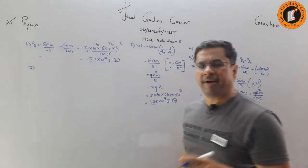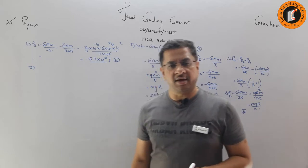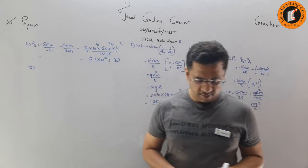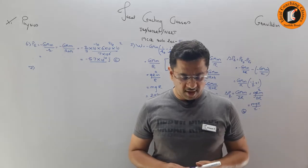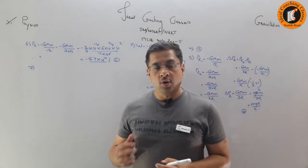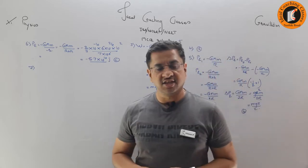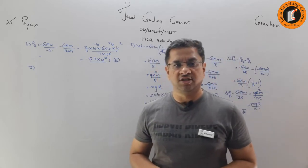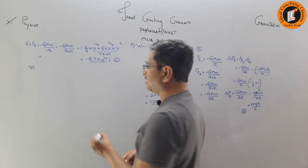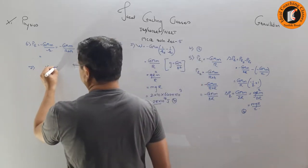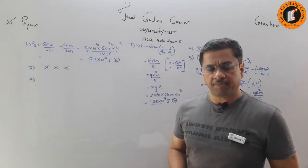Question number 7 asks for total energy. To find total energy I need kinetic energy in addition to potential energy, but we haven't studied how to find kinetic energy yet. So we bypass this question for now and look at question number 8.